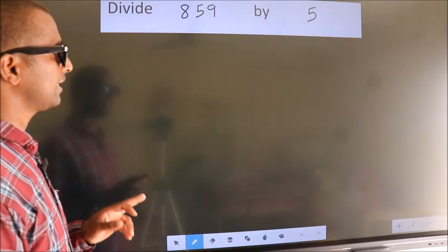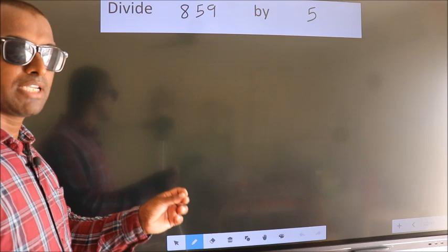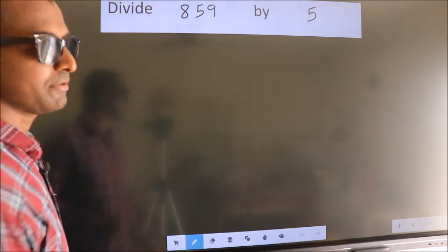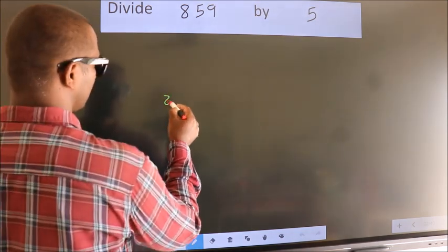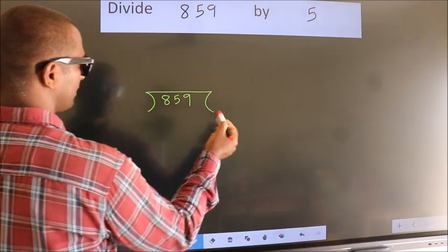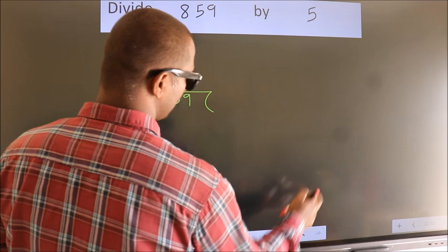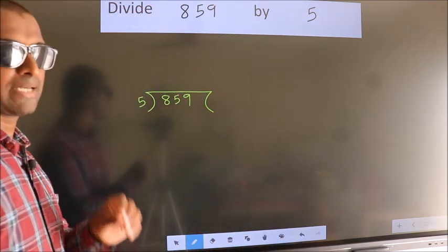Divide 859 by 5. To do this division, we should frame it in this way. 859 here, 5 here. This is your step 1.